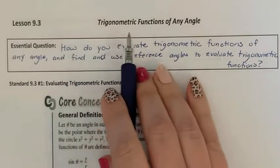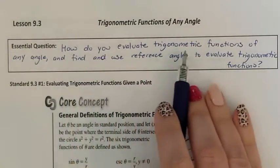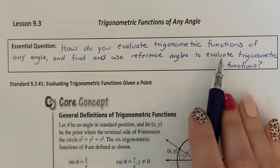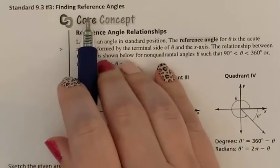That's 9.3, trigonometric functions of any angle, our essential question. How do you evaluate trigonometric functions of any angle and find and use reference angles to evaluate trigonometric functions? Standard 9.3 number 3, finding reference angles.